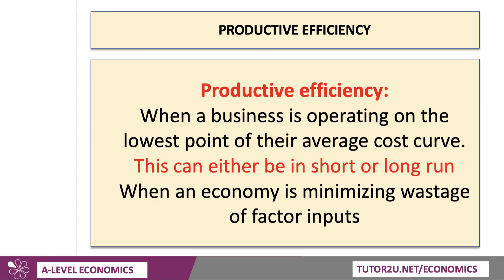Productive efficiency happens when a business is operating on the lowest point of their average cost curve, achieving the optimum cost per unit. This can be in the short run — the lowest point of AC where MC cuts AC — or you might think about long-run costs, economies and diseconomies of scale. Productive efficiency is when a business reaches the minimum efficient scale of production, the lowest feasible cost per unit in the long run. It's also associated with minimising the wastage of factor inputs — in other words, operating on our PPF.